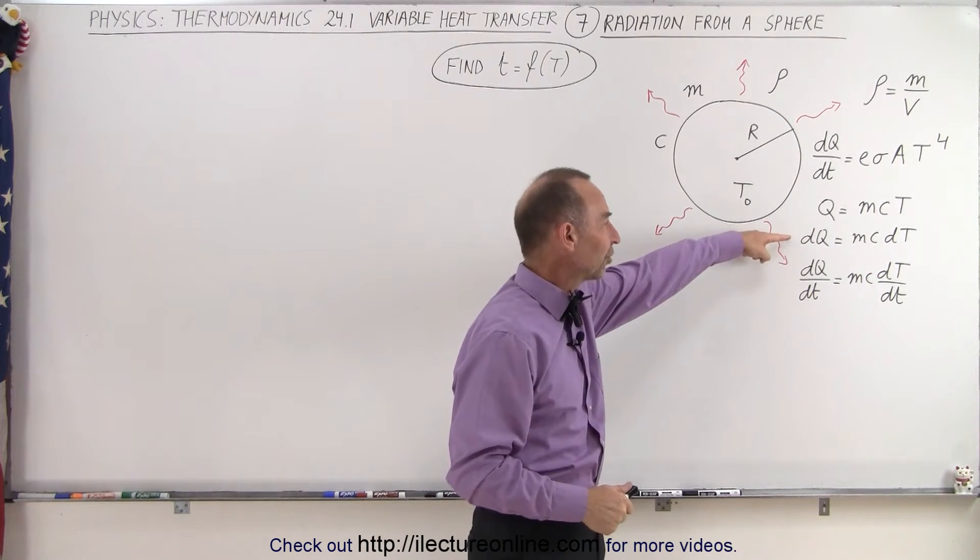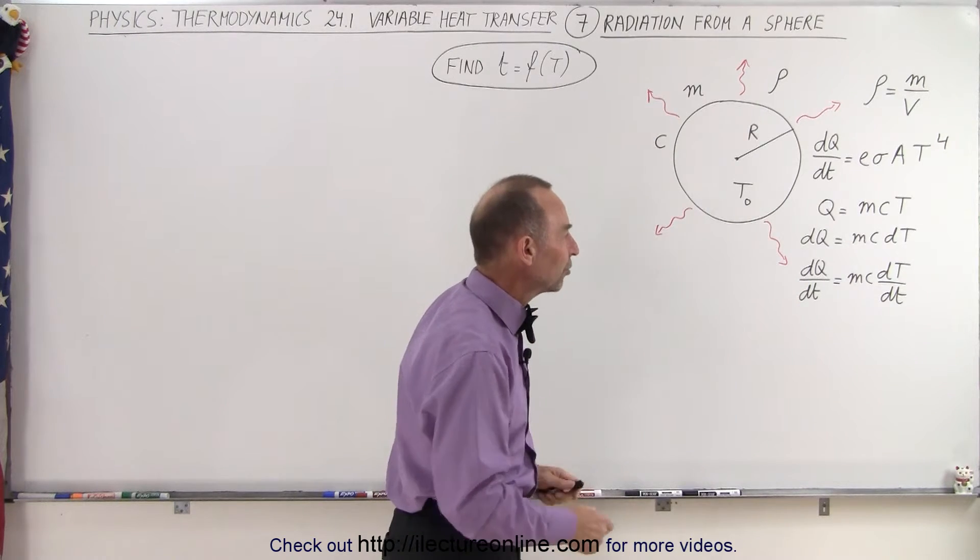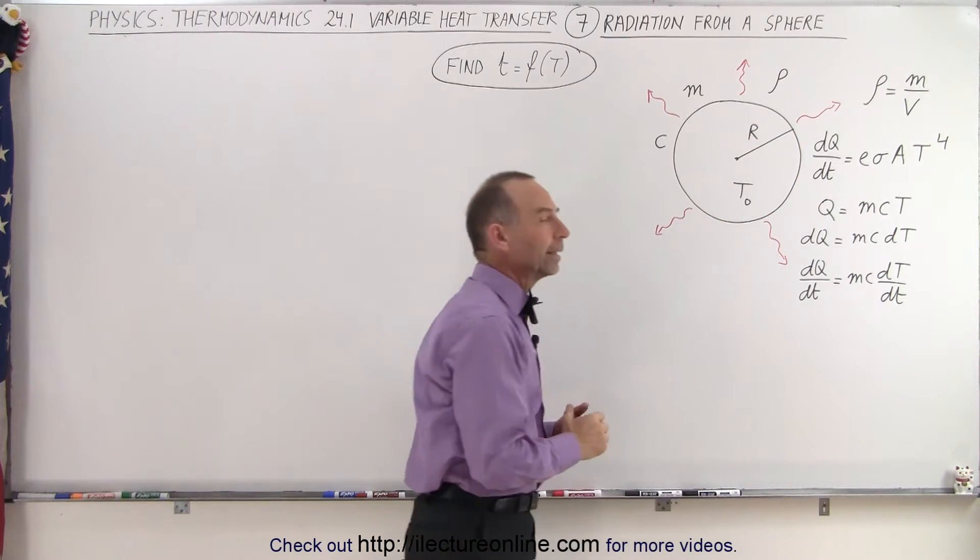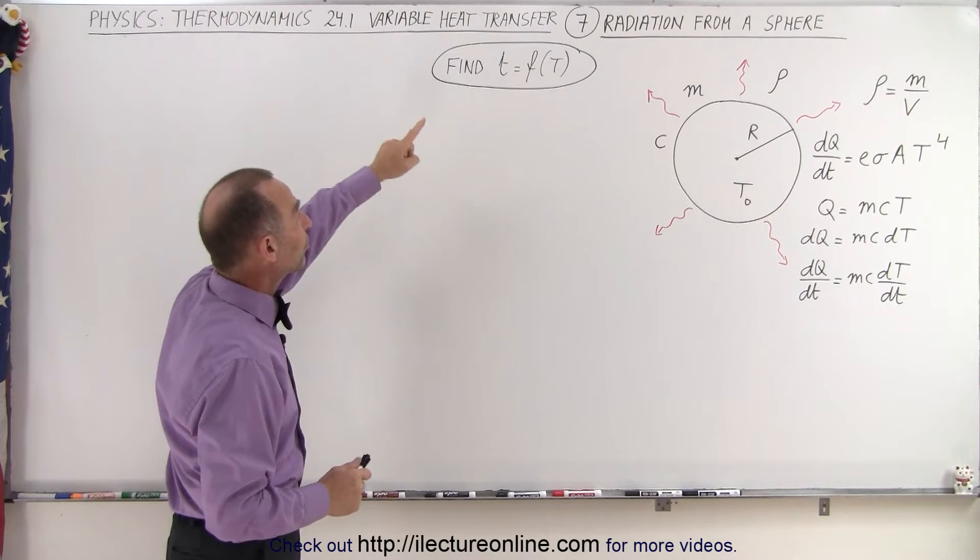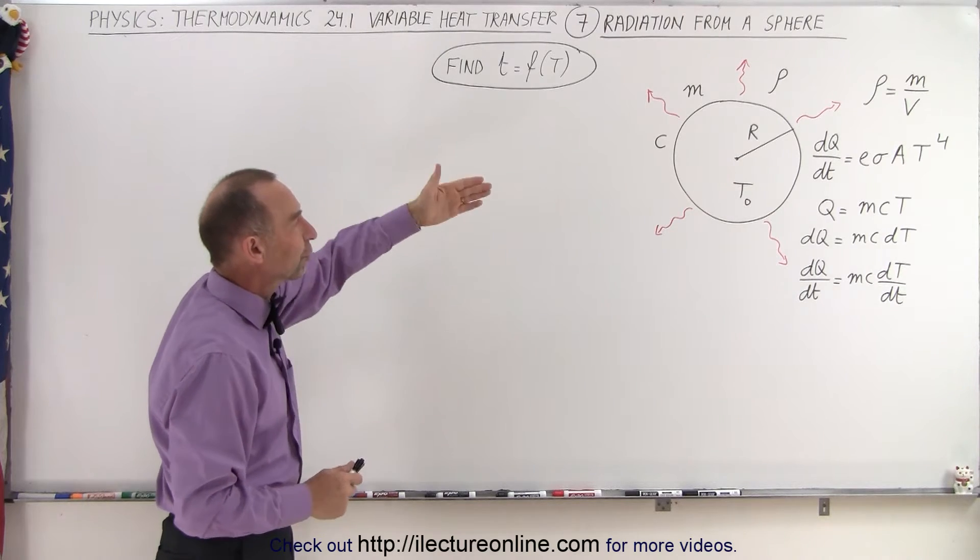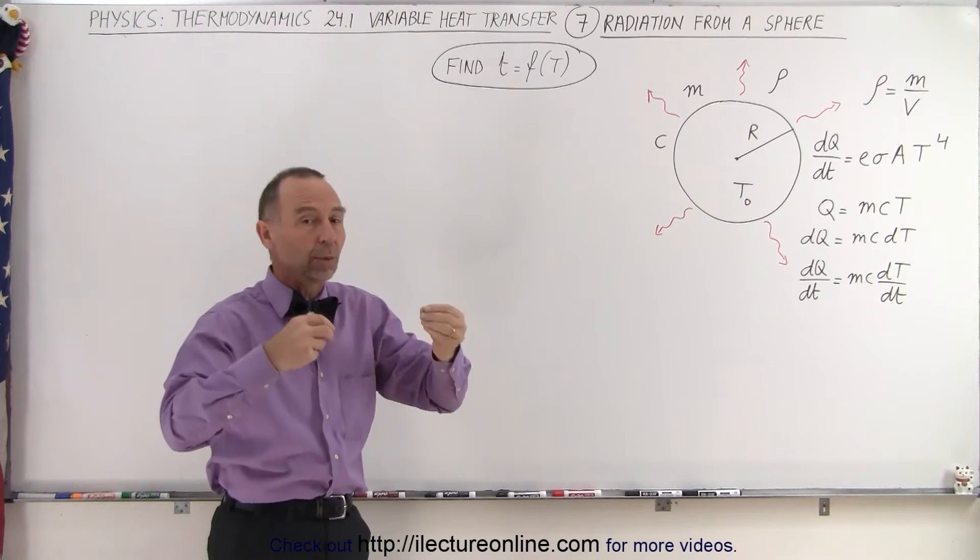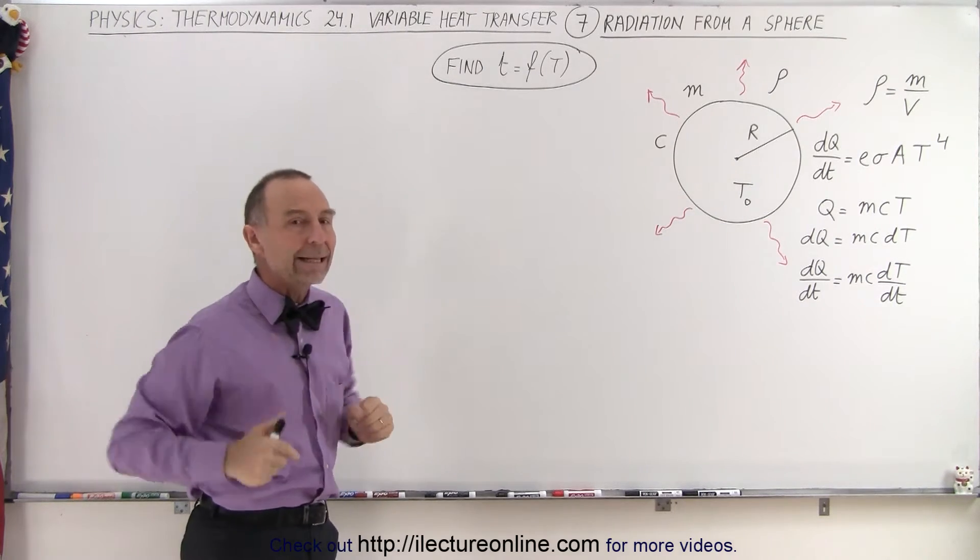Then we can write that in the differential equation and divide it by the rate of time expenditure. So then dQ/dt is equal to MC dT/dt. Now what we'd want to do here is find an equation that describes the time as a function of temperature. In other words, how long will it take for that object to reach a certain temperature as it's radiating out heat.